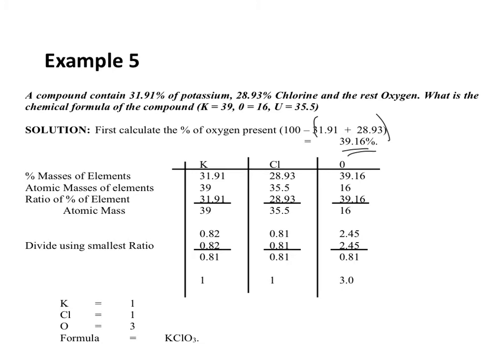We will now find the ratio of the percentage of the elements to the atomic mass. For potassium, it is 31.91 over 39, which equals 0.82. For chlorine, it is 28.93 over 35.5, which equals 0.81. For oxygen, it is 39.16 over 16, which equals 2.45. The next step is to divide using the smallest ratio.